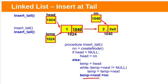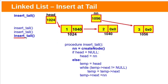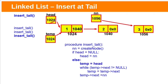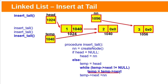Similarly, for this insertTail operation a new node will be created. Here also head is not null, meaning the linked list is not empty. So add this newly created node at the tail of the linked list. Again take the temp pointer, assign it with the head value, and advance the temp pointer until temp next is not equal to null. Here temp next equals null.